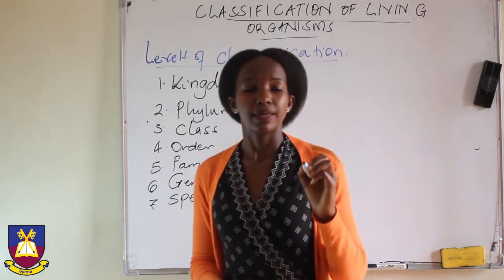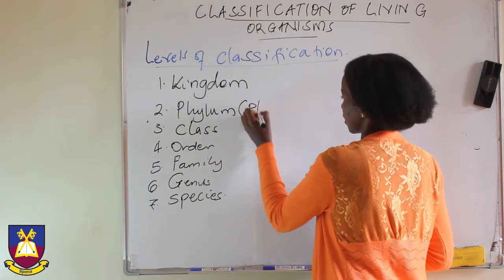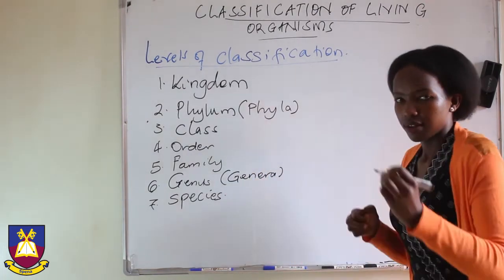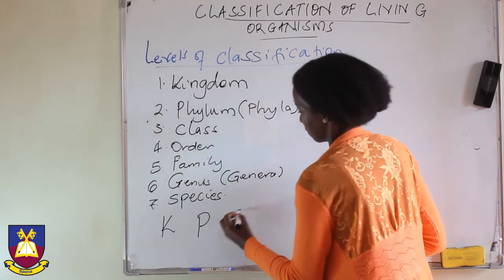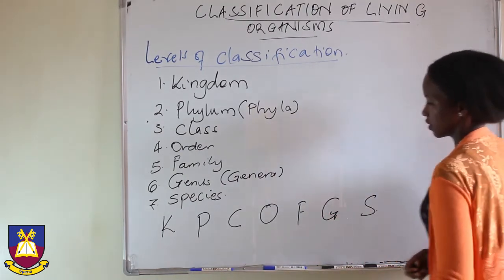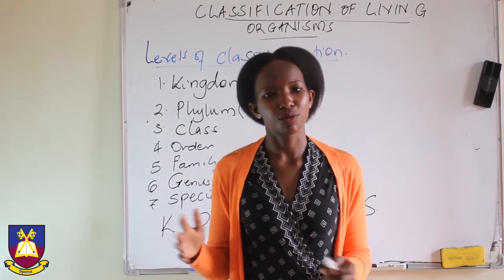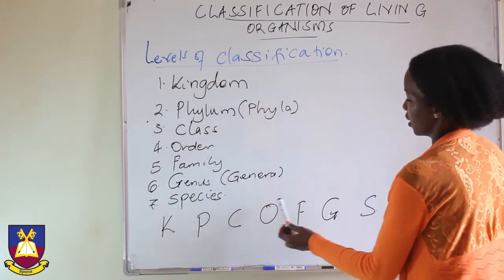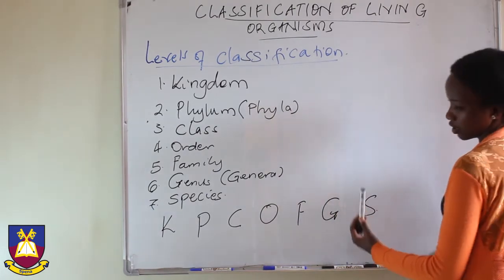It is important for you to know them in that order. The plural for phylum is phyla, and the plural for genus is genera. You can find a mnemonic to help you remember, something like: 'King Phyla Could Order For Good Species.' That is kingdom, phylum, class, order, family, genus, and species.